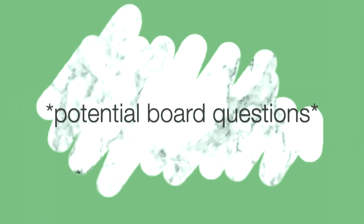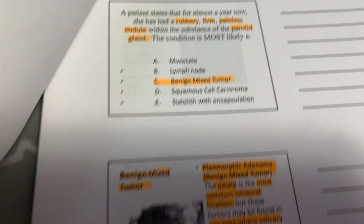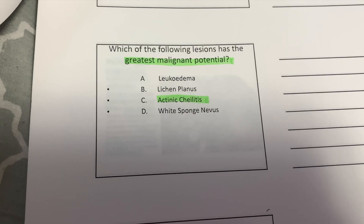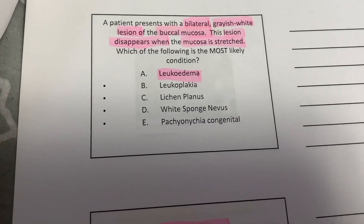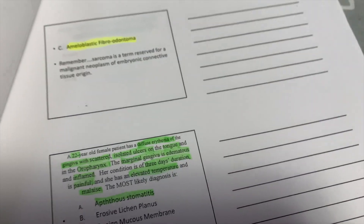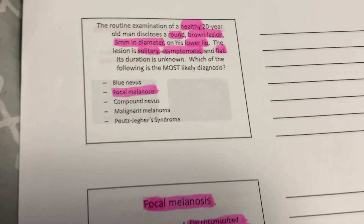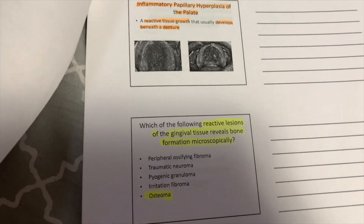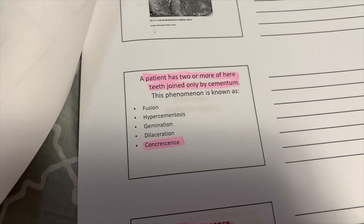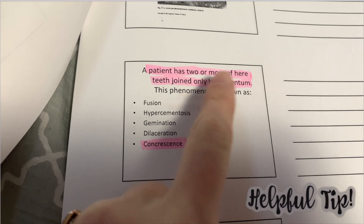If you stuck around to the end of the video, you're in luck because I'm going to go over some of my final exam questions so you can keep these in mind to study for your boards. A good way to remember cementum concrescence is C&C.